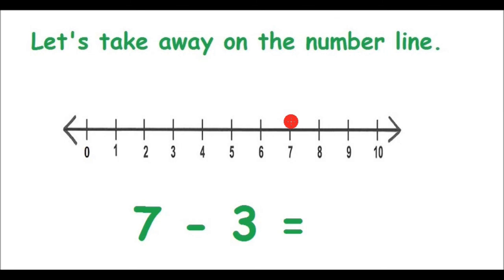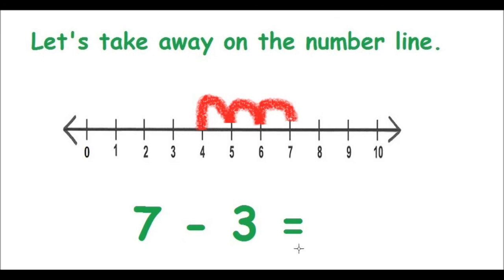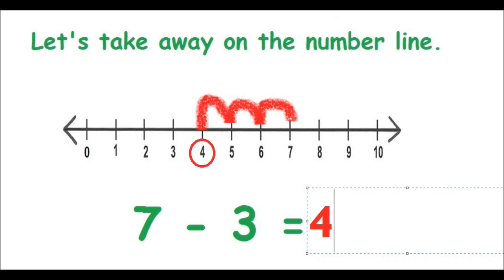Let's jump backwards 3 times. 1, 2, 3. And children, we have landed on our answer. 7 take away 3 is equal to 4. Excellent work, boys and girls!